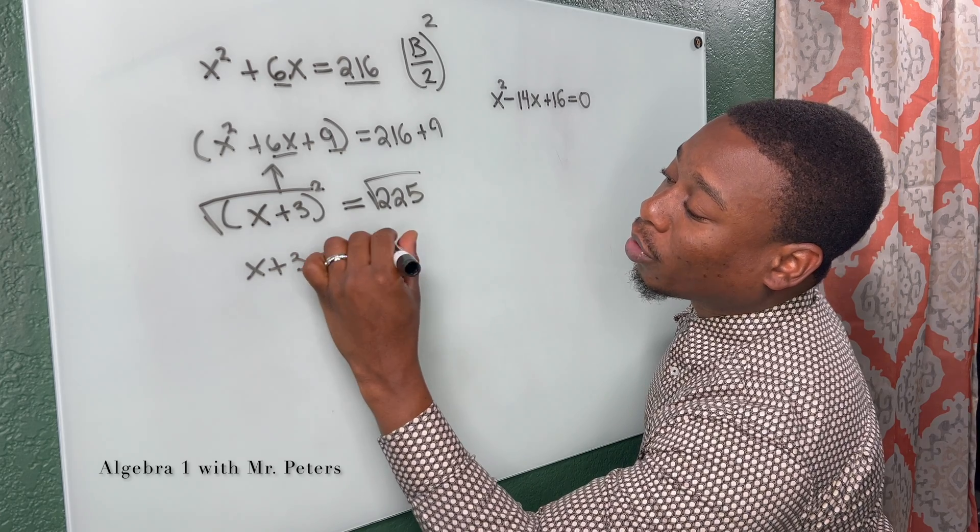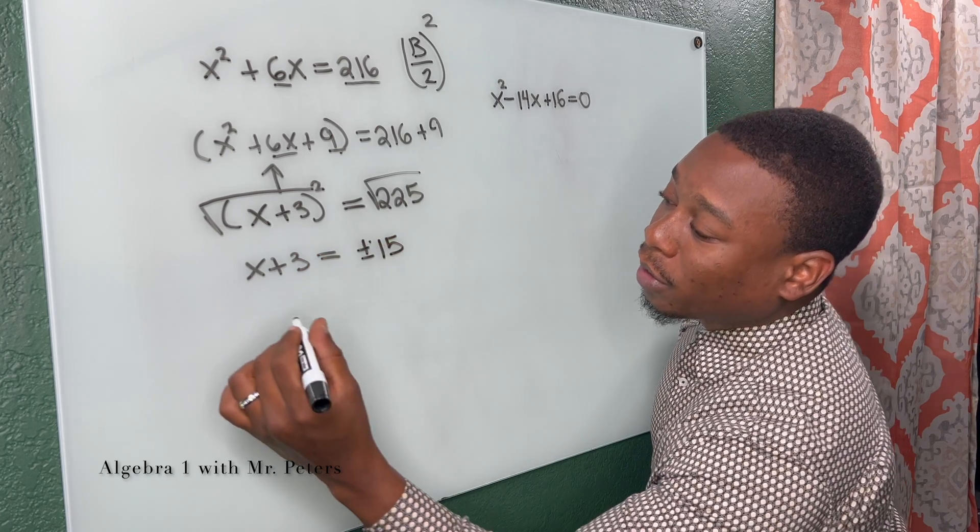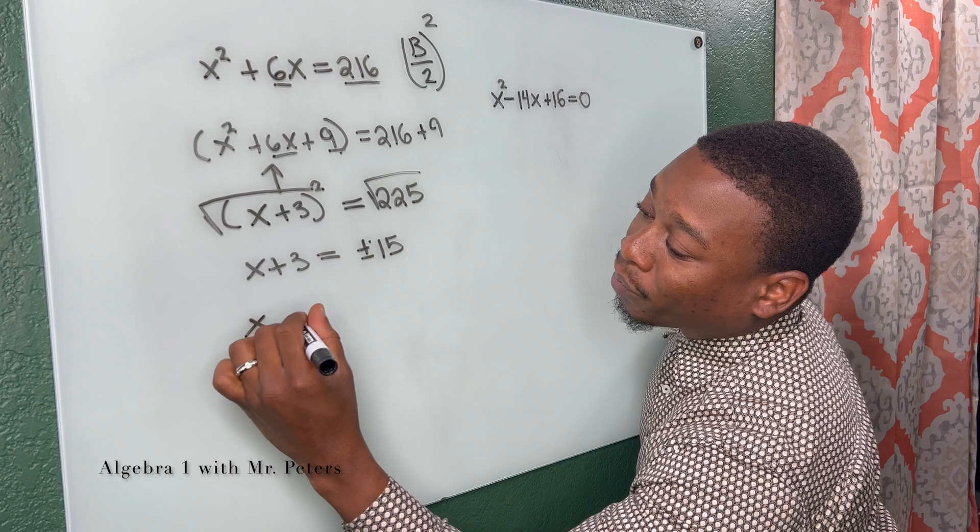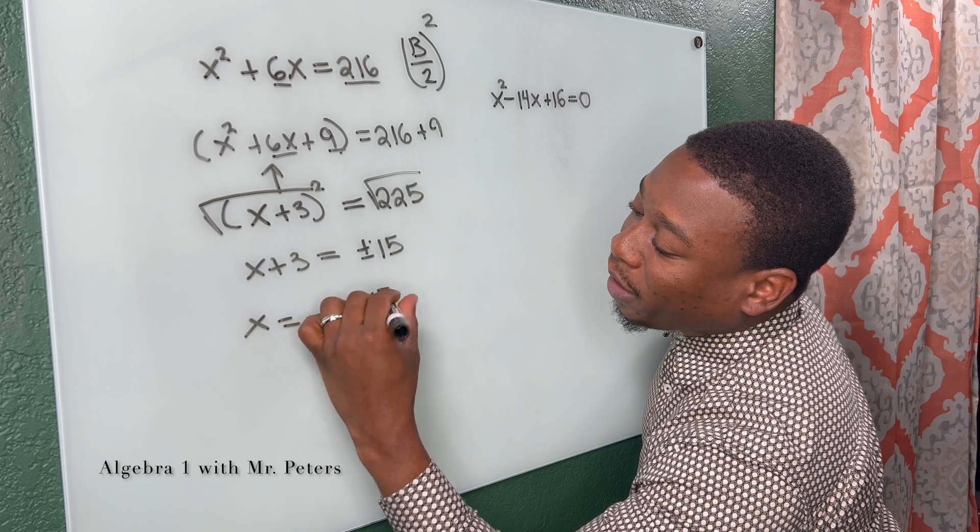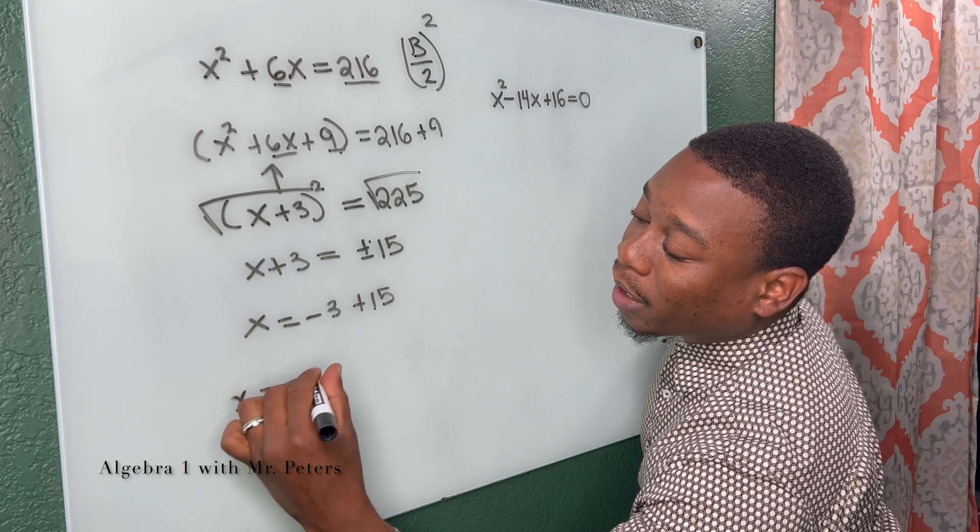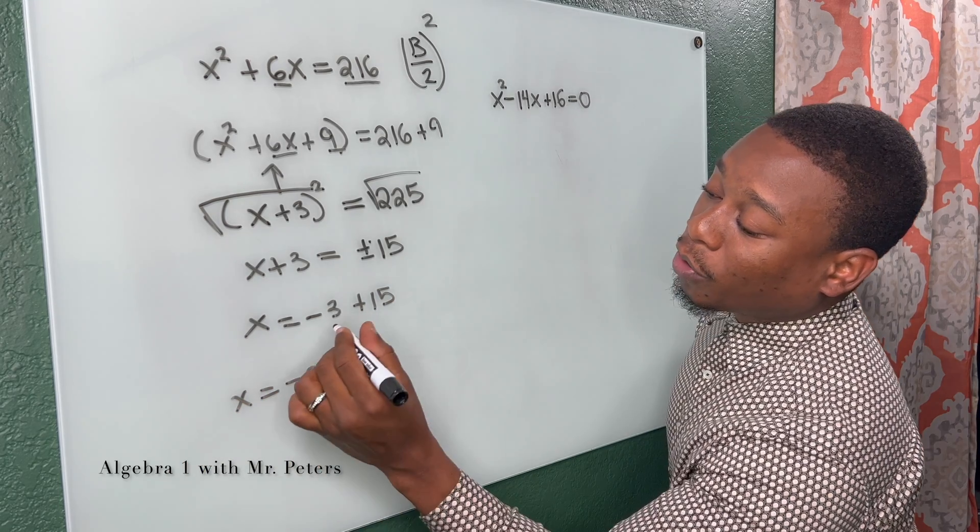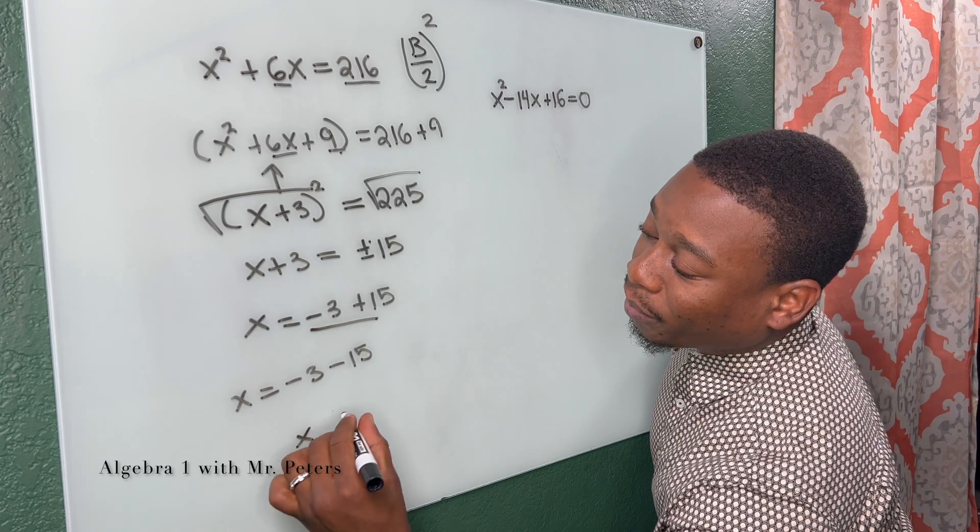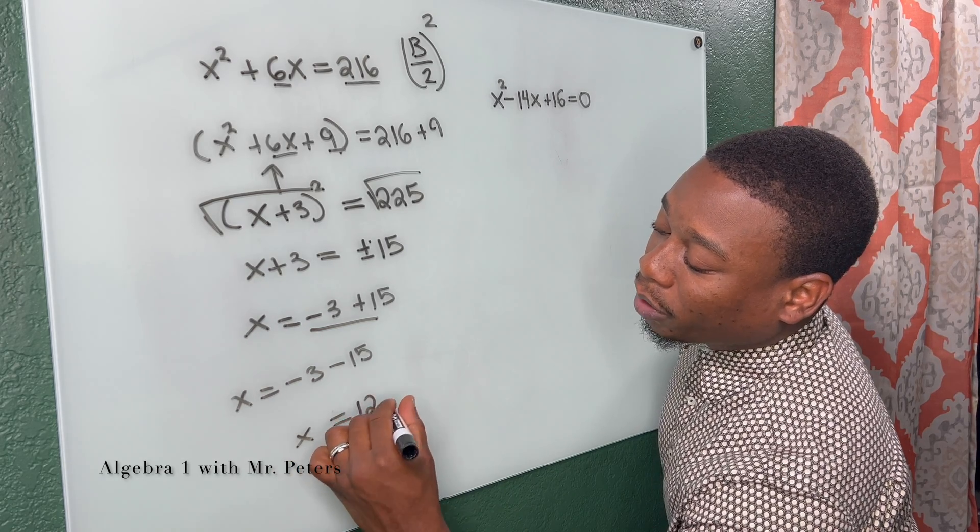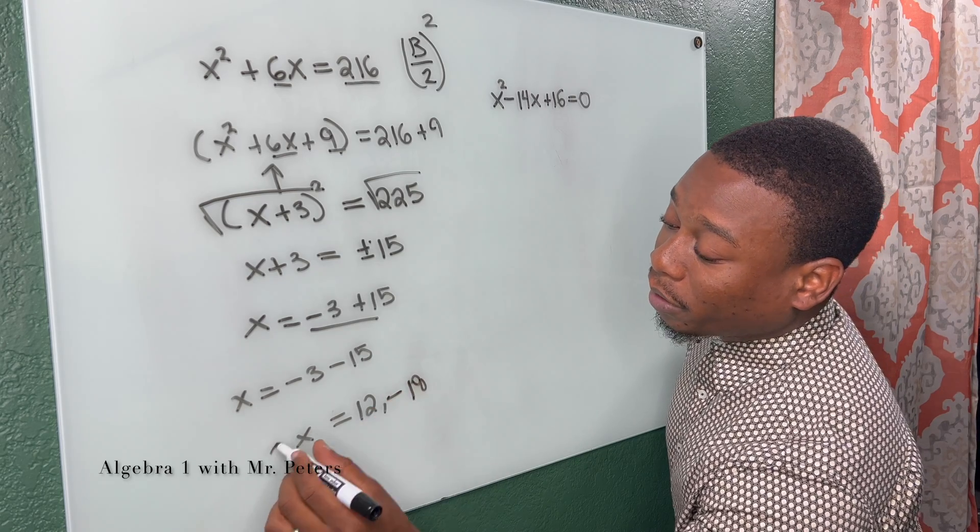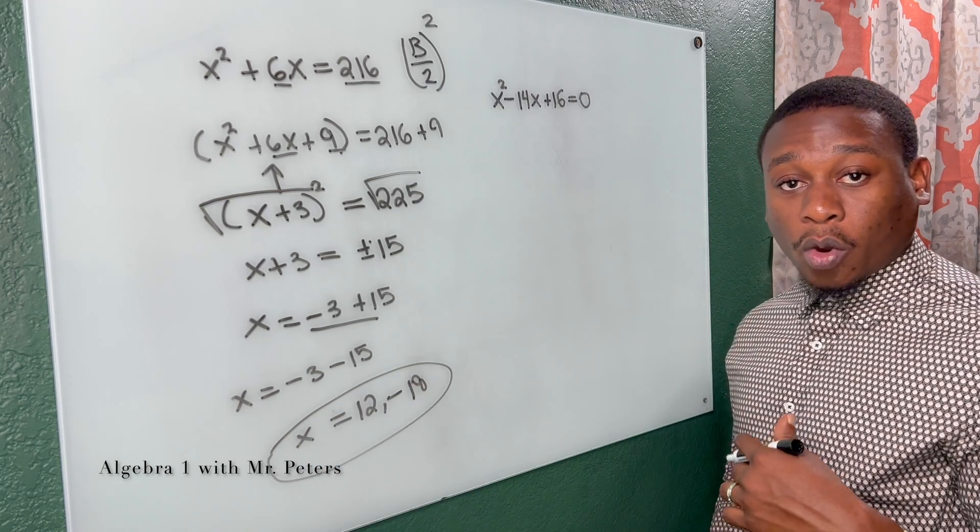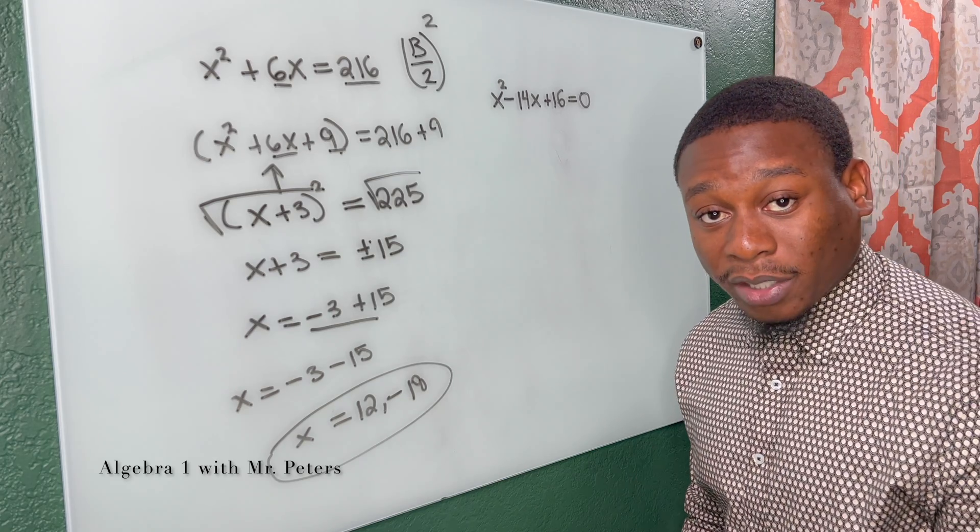So now with this step, x is equal to negative 3 plus 15. And x is equal to negative 3 minus 15. So this answer here, we know x is equal to positive 12. And down here, we know x is equal to negative 18. So this is how we use the square root method to complete the square.